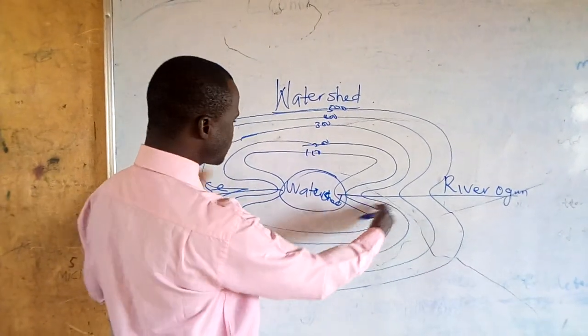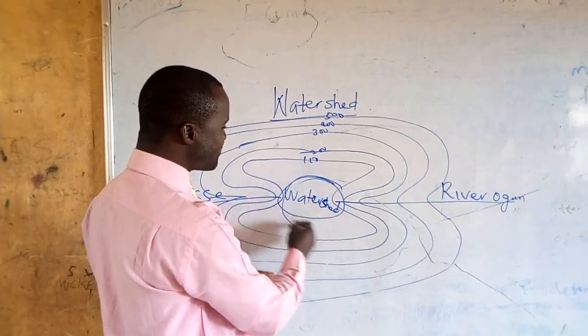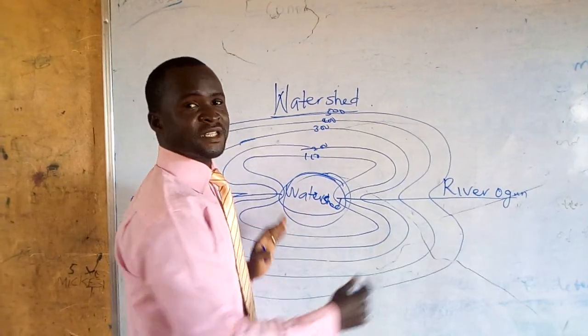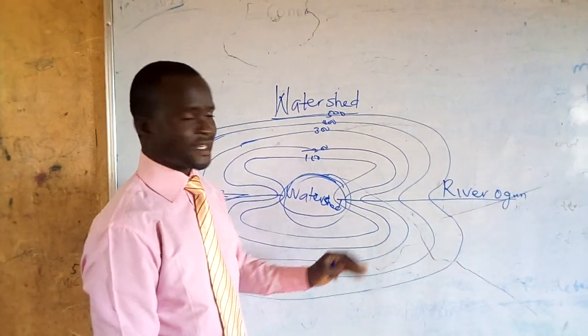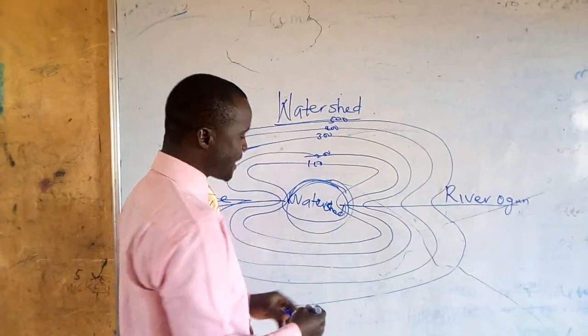You can see that these two rivers come from the same region but they are flowing in different directions. That is why we call it watershed.